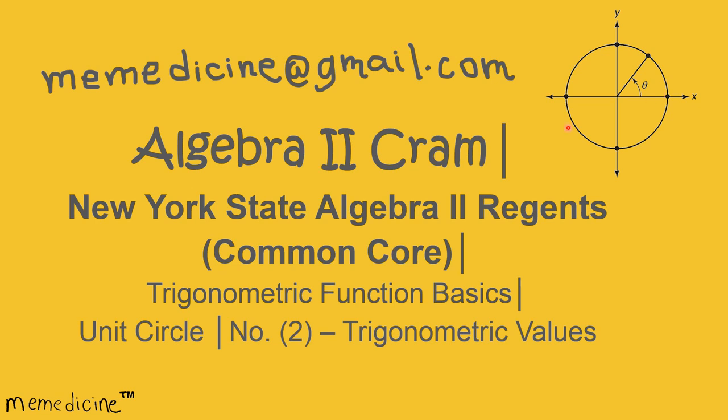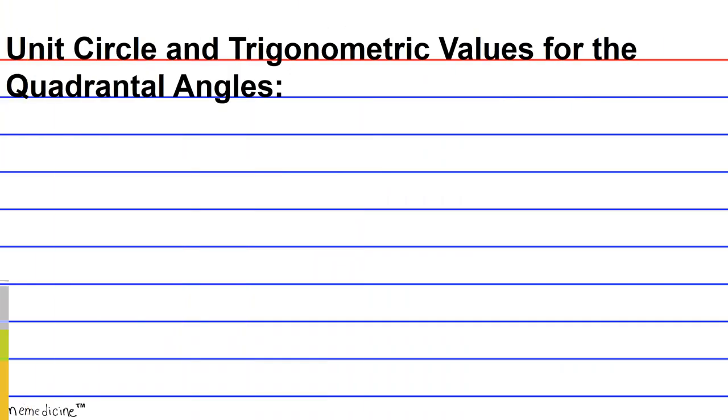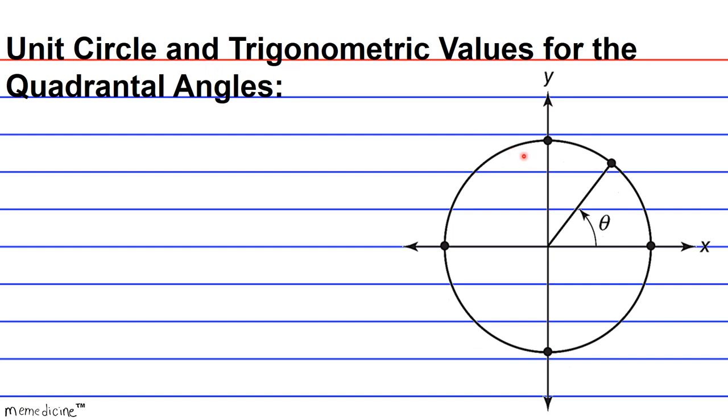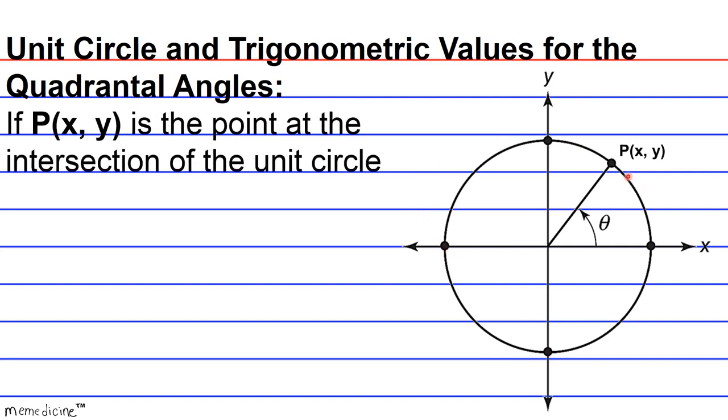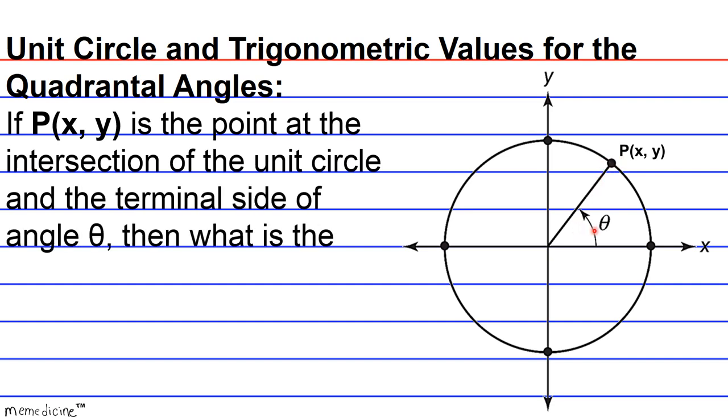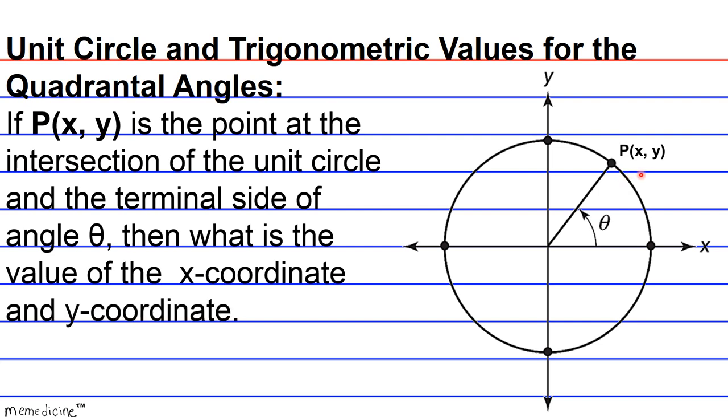So, let's delve into the concept of the unit circle and trigonometric values. Unit circle and trigonometric values for the quadrantal angles. If P(x, y) is the point at the intersection of the unit circle and the terminal side of angle theta, what is the value of the x-coordinate and the y-coordinate?